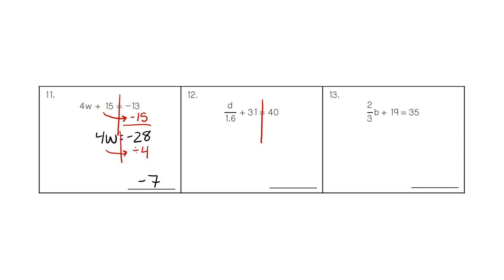For number 12, instead of plus 31, we do the opposite — minus 31. We still have D over 1.6, and 40 minus 31 is 9. We continue doing the opposite operation: instead of dividing by 1.6, we multiply. 9 times 1.6 gives a value of 14.4.